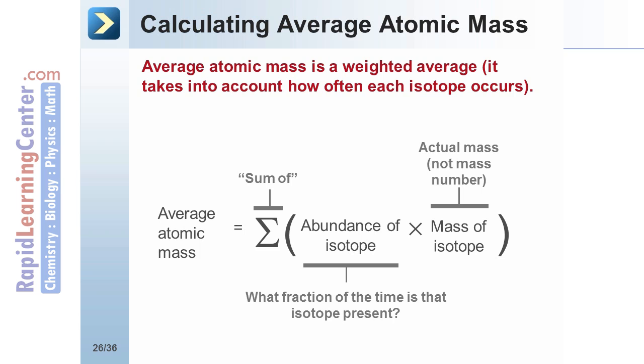To find the average atomic mass, multiply each isotope's abundance by that isotope's mass, and then sum all of those answers.